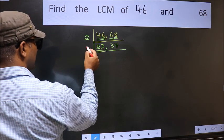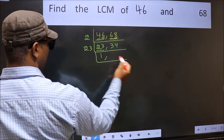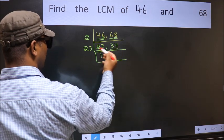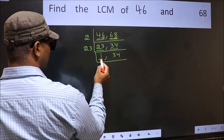Now here we have 23. 23 is a prime number, so 23×1 is 23. The other number 34 is not divisible by 23, so we write it down as it is. We got 1 here.